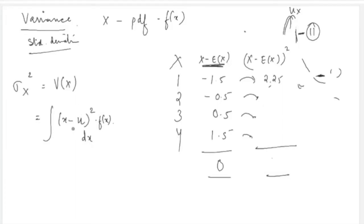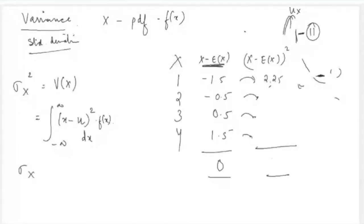So variance = integral of (x − μ)²·f(x) from minus infinity to infinity. The standard deviation is simply the square root of the variance. This integral can also be written as E[(x − μ)²] — the expected value of the squared deviation.